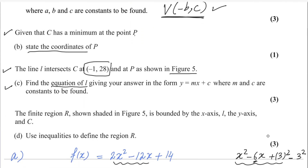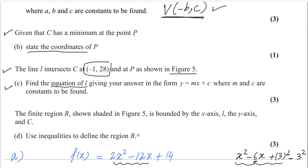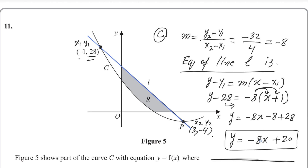Let's move on to the last part. The finite region R, shown shaded in figure 5, is bounded by the x-axis, line L, y-axis, and curve C. Use inequalities to define the region. The equation of line L is y = -8x + 20. The shaded region is below this line, so the first inequality is y ≤ -8x + 20.